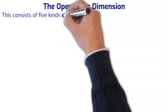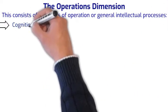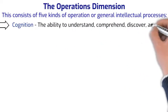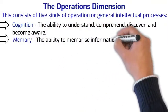This consists of five kinds of operation or general intellectual processes. Cognition: The ability to understand, comprehend, discover, and become aware. Memory: The ability to memorize information.